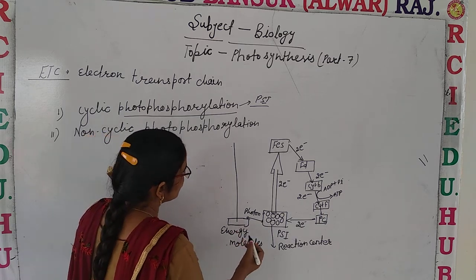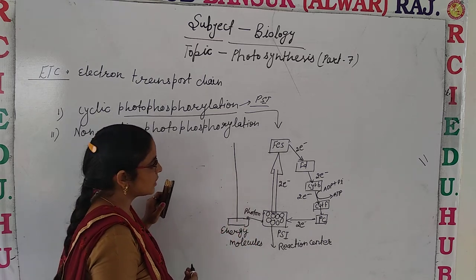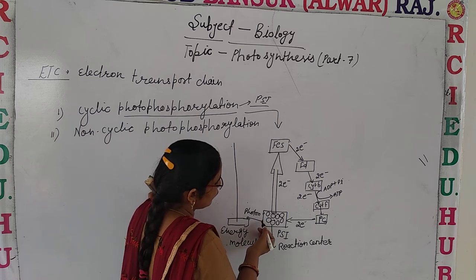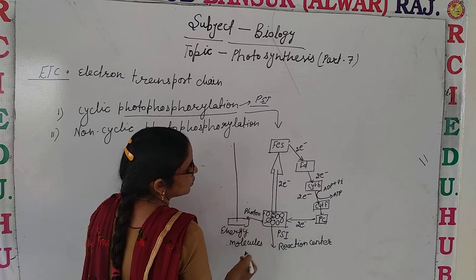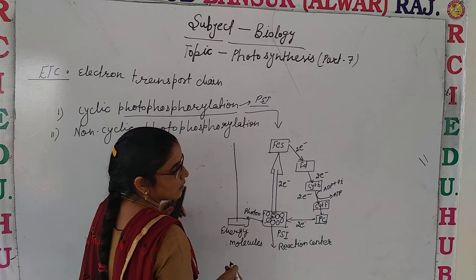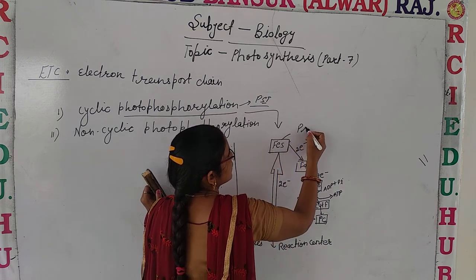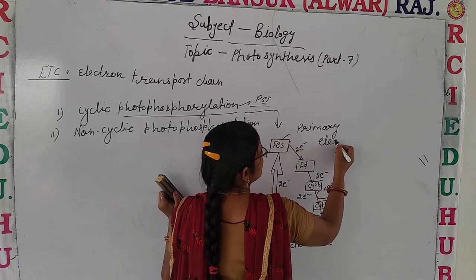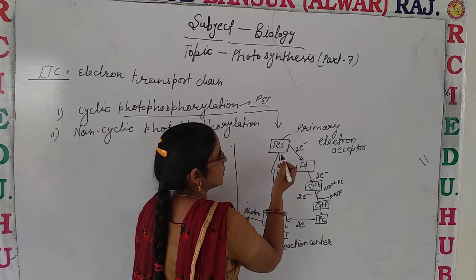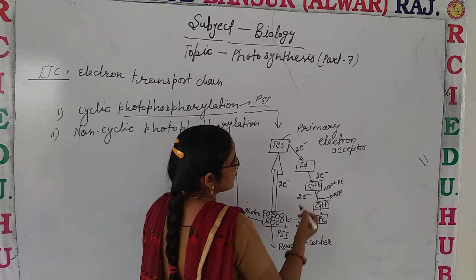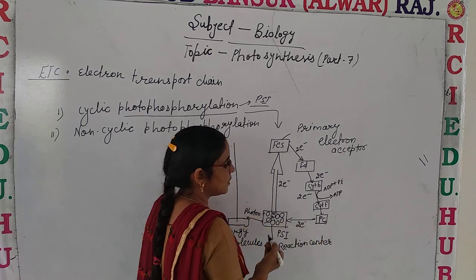Let's discuss the pathway of cyclic photophosphorylation. First, energy in the form of photons is absorbed by the accessory pigments in the photosystem. They absorb the photon and pass it on to the reaction center. Once energy is passed to the reaction center, the electrons go into an excited state. They are first absorbed by the primary electron acceptor, which is the iron-sulfur protein (FS). Then it is passed to ferredoxin, then cytochrome B, then cytochrome F, and then to plastocyanin. Through this pathway, the electrons return back to PS1.